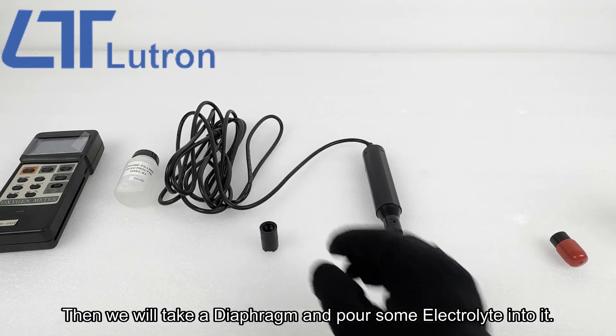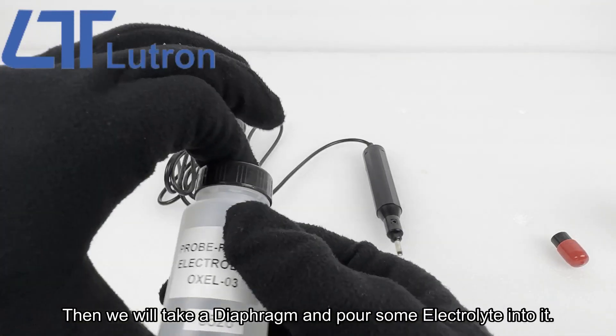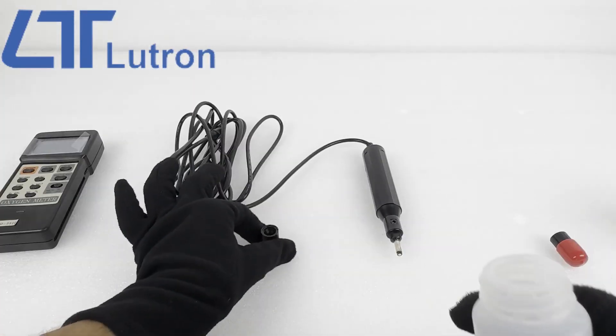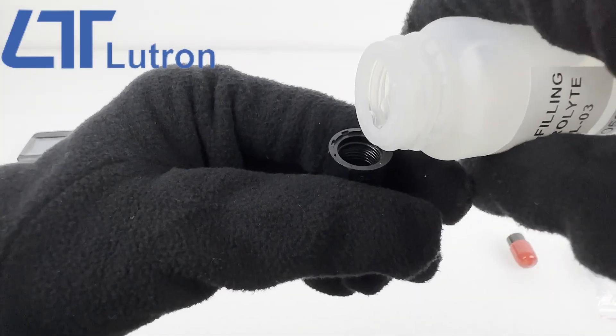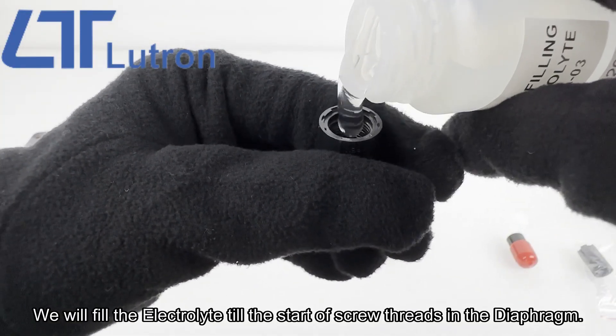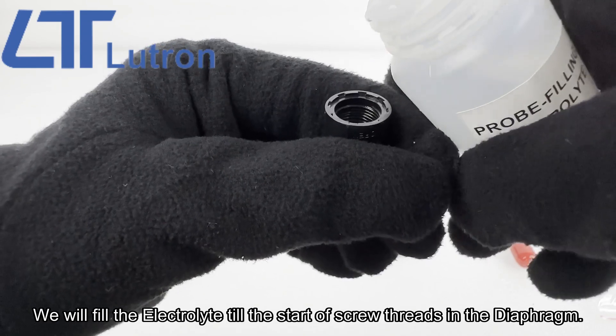Then we will take a diaphragm and pour some electrolyte into it. We will fill the electrolyte till the start of screw threads in the diaphragm.